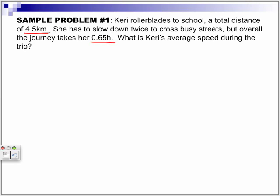We know this is represented as our distance. We know 0.65 hours is represented by time. If you look at what the question asks, what is Keri's average speed? It is asking us to find VAV, our average speed.